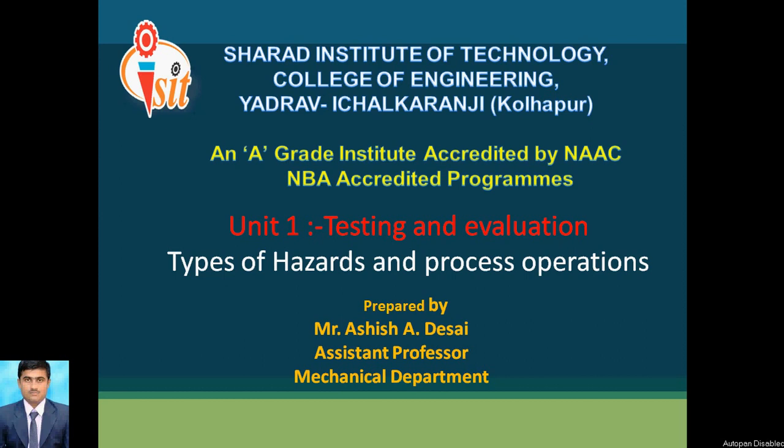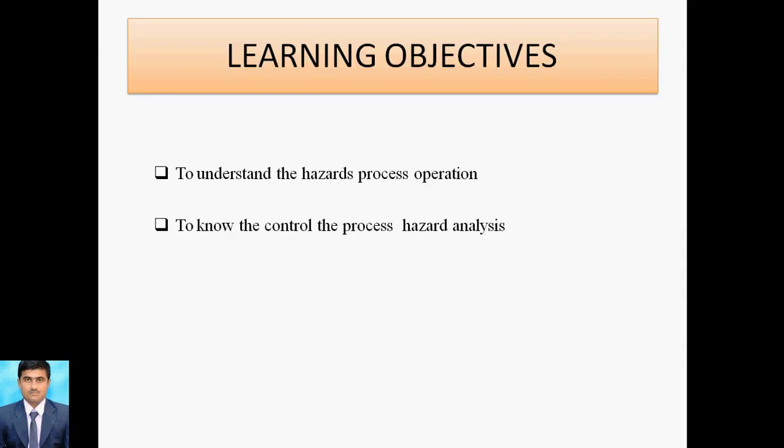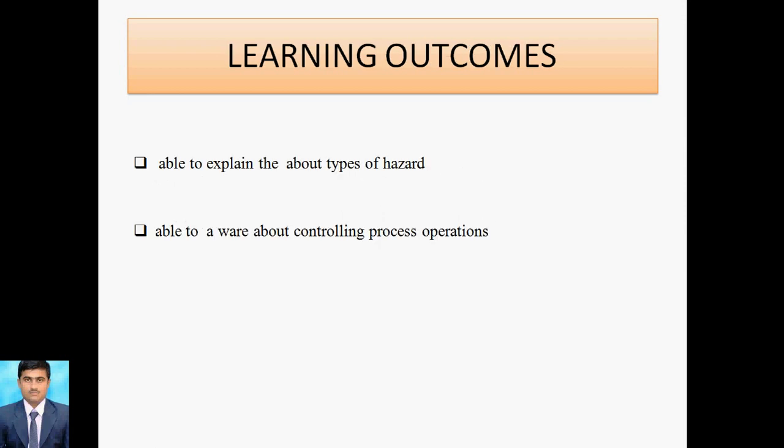First, we look at the learning objectives for the session. The first learning objective is to understand the hazard process operation. The second learning objective is to know the control of the process hazard analysis. The first learning outcome is that the student will be able to explain about the types of hazard. The second learning outcome is that the student will be able to be aware about controlling the process operations.